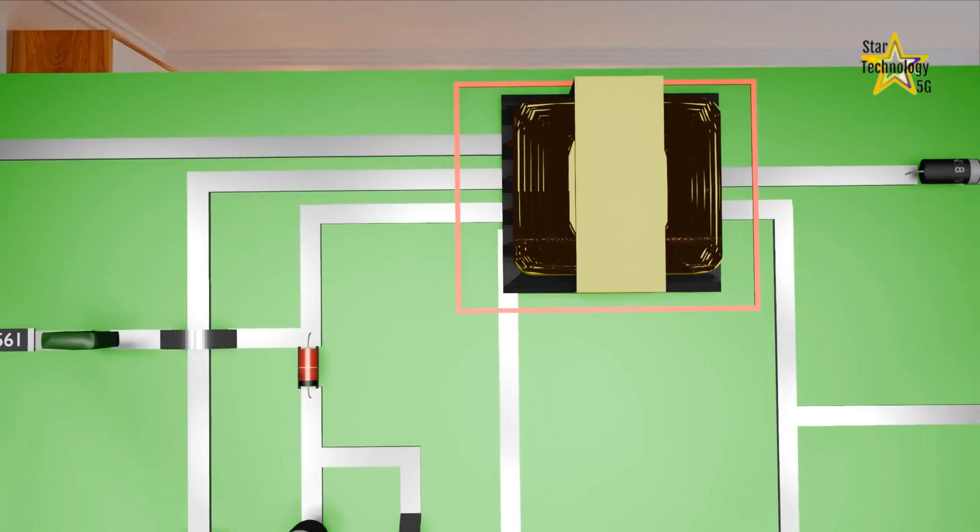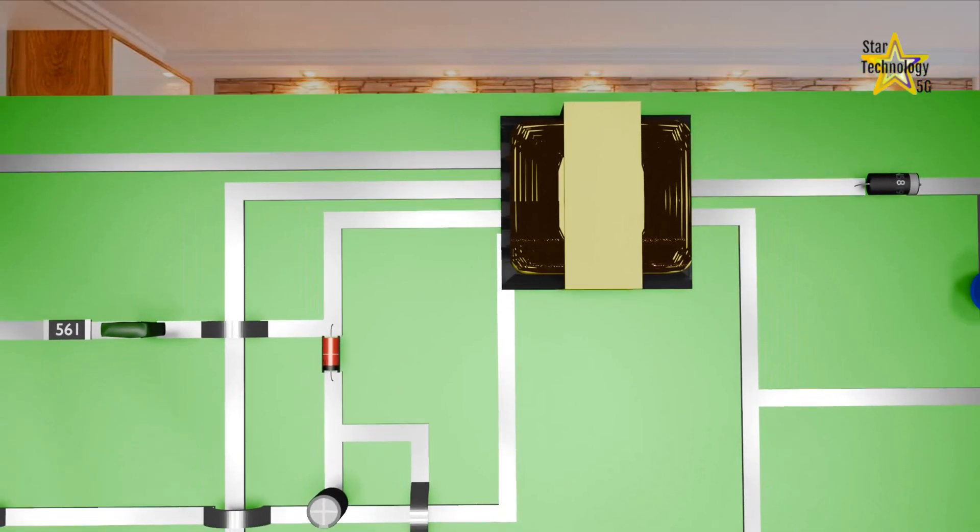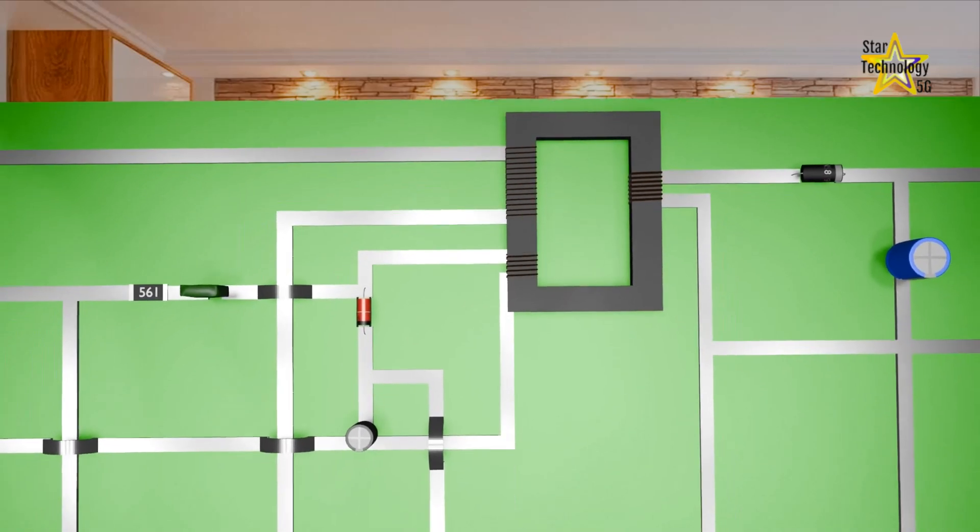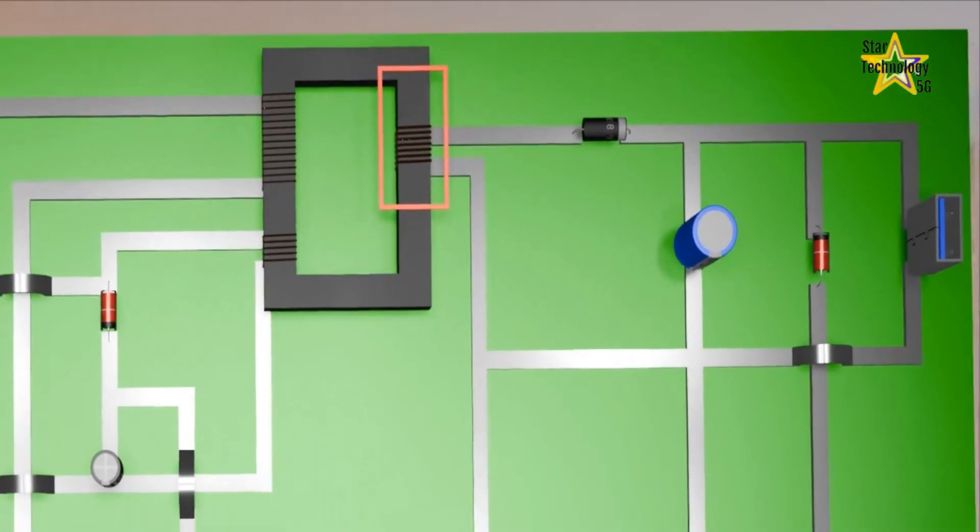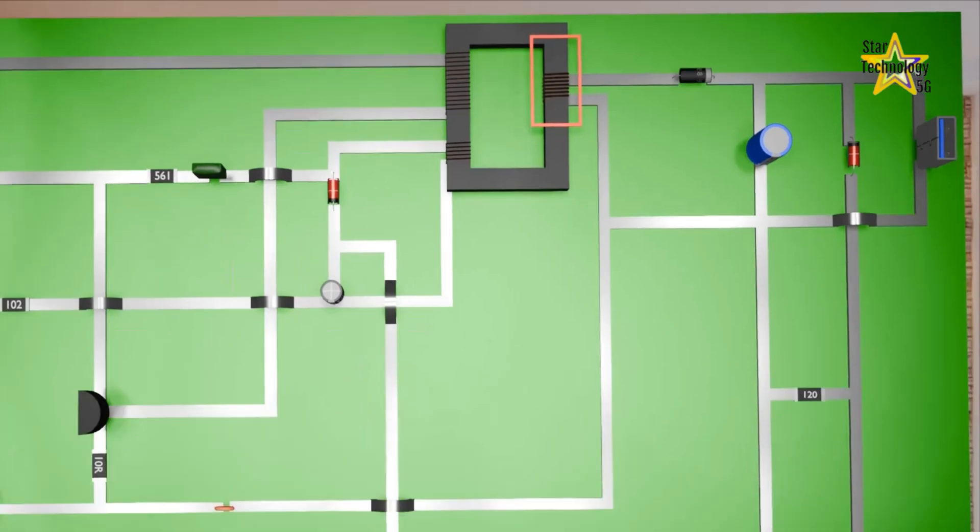For better understanding, I will change this transformer into symbolic form. This is primary winding. This is secondary winding. Secondary winding is used to step down the voltage.